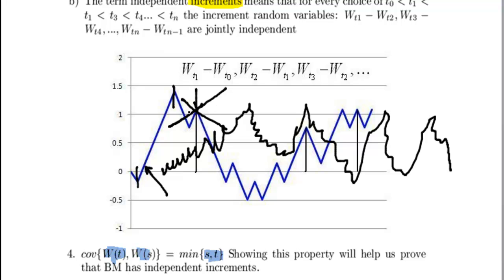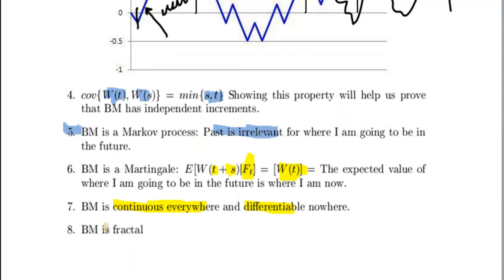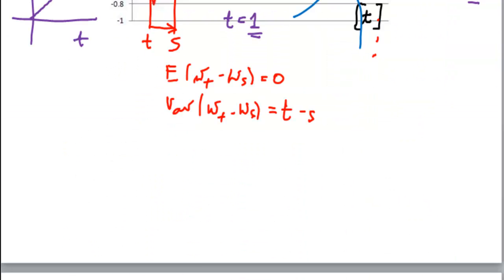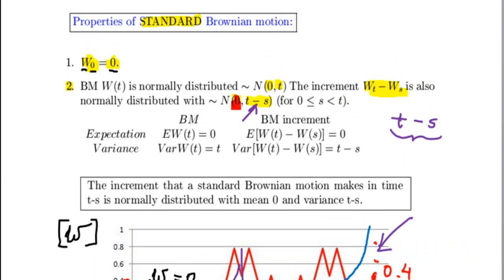In fact, if you were to zoom in on this Brownian motion path, you would see that it's constantly moving — it's impossible to find a derivative at any point. We'll prove this more formally later on. And that's what property number 8 is saying: Brownian motion is fractal, i.e., too irregular and rough in its structure. In the next videos, we'll be showing all these properties in more detail, actually proving them one by one.